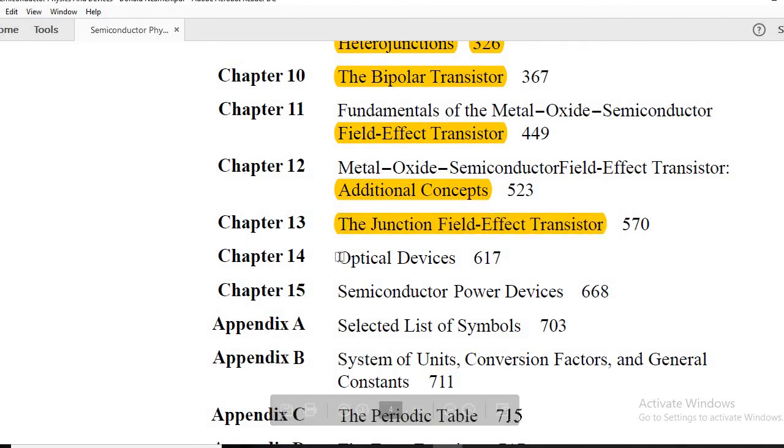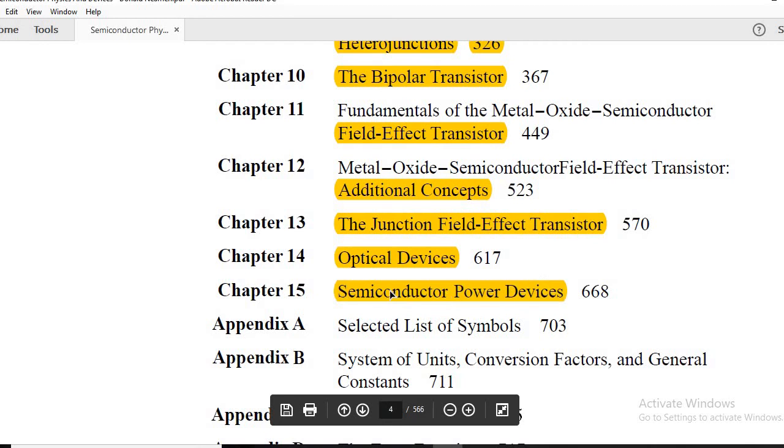The junction field effect transistor. So this time question was from solar cell again. You can go through from this optical devices, though in public PDF, chapter up to 11 is given, these chapters have been cut off. I don't know how, why. But you can refer the hard copy and the semiconductor power devices. This is important as far as engineering services are concerned and ISRO examination.